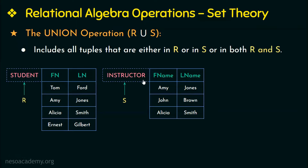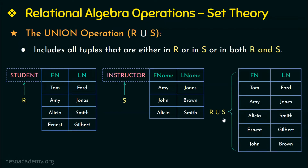Now I can perform a union operation on these two relations. Student union instructor, or R union S, gives this resulting relation with tuples from both R and S. From R all four tuples are selected, and from S only one new tuple is selected. The remaining tuples from S are already present in R, so they are eliminated as duplicates. That is all about the union operation.